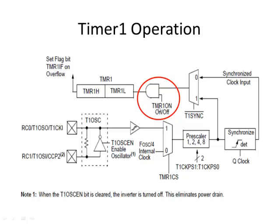There's a bit in the control register called the Timer 1 ON bit, and that just turns the timer on or off. It doesn't actually turn power on or off — what it does is allow clock pulses to come through. Remember how an AND gate operates: if this bit is a 0, you've got a 0 on one pin of an AND gate, so the output will always be 0 regardless of what else is going on, effectively turning the timer off. When this bit is a 1, every time you get a pulse, that pulse will come through to the timer.